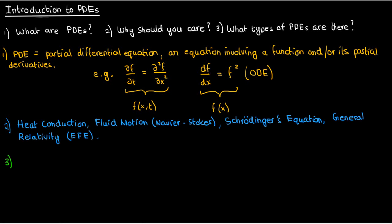Now let's go to the third question, which is what types of PDEs are there? The answer is that there are many types, and there are many ways you can classify PDEs based on certain criteria. For instance, you could classify PDEs based on their order. The order of a PDE is the number corresponding to the order of the highest partial derivative in the equation.